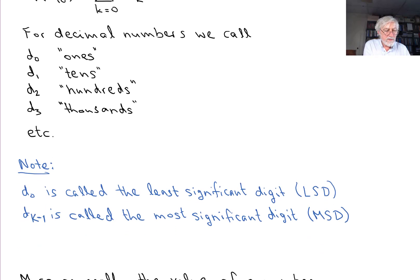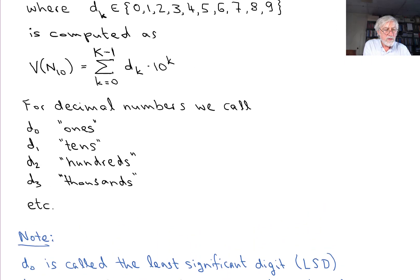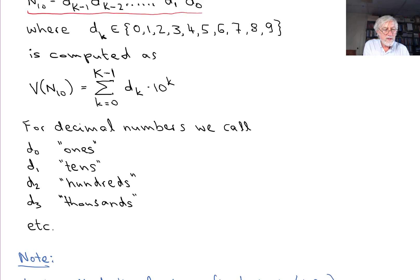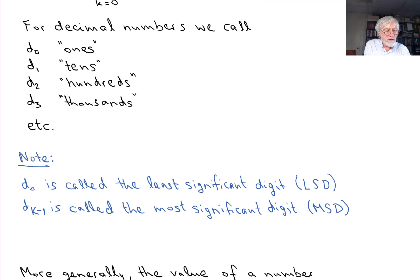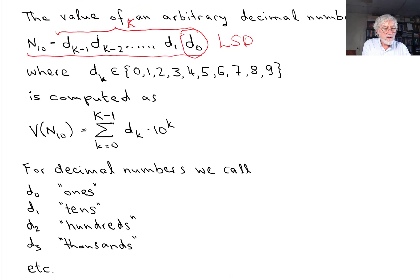We refer to d0, the rightmost digit, as the least significant digit — the LSD. And d(K-1), the leftmost digit, is called the most significant digit — the MSD.